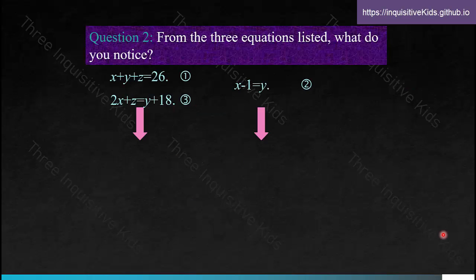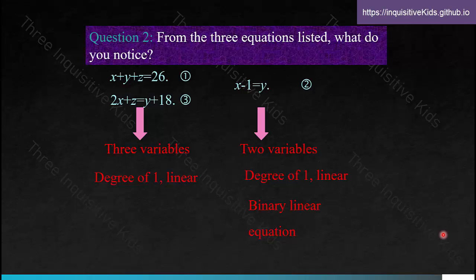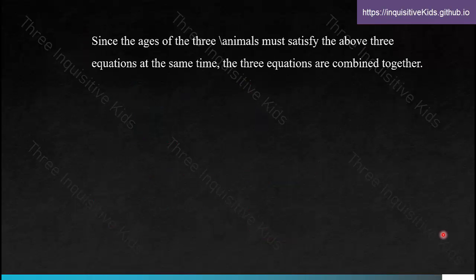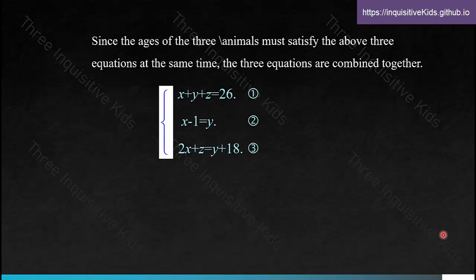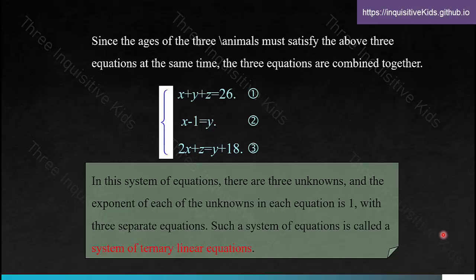From the three equations listed, what do you notice? Here we have two variables, but equations one and three each have three variables. Equation number two has a degree of one and is linear — it is a binary linear equation. Equations one and three are linear as well and are ternary linear equations, or linear equations in three variables. Since the ages of the three animals must satisfy all three equations at the same time, the three equations are combined together, forming a system of equations in three variables — a system of ternary linear equations.